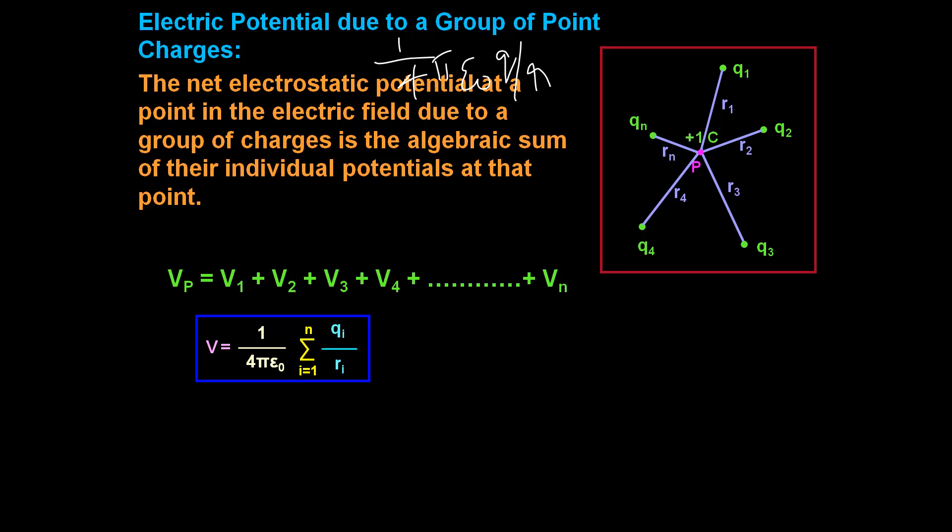Now let us discuss about potential due to a special system of charge, which is nothing but an electric dipole. We already discussed the electric dipole and studied how to find out the electric field due to an electric dipole at the axial and equatorial points. If you haven't watched that video, please do visit my channel. An electric dipole is a system of two equal but opposite charges kept at a very short distance.